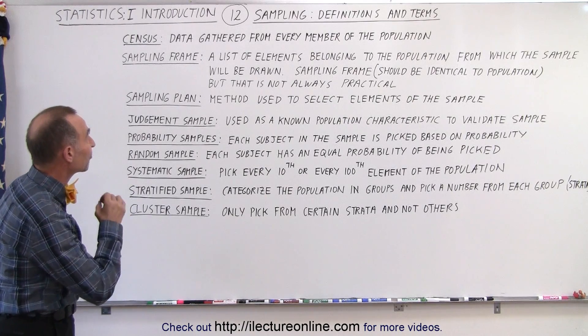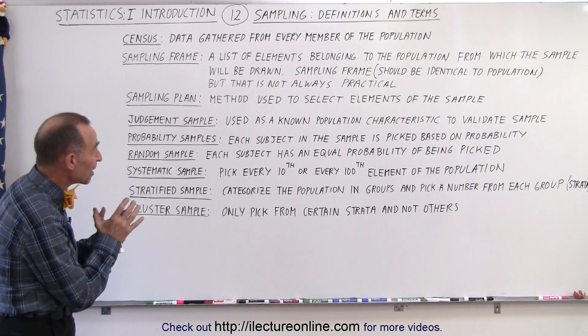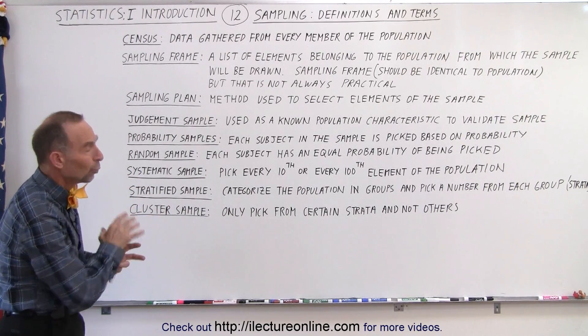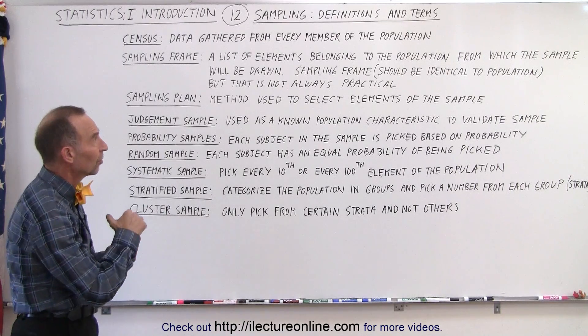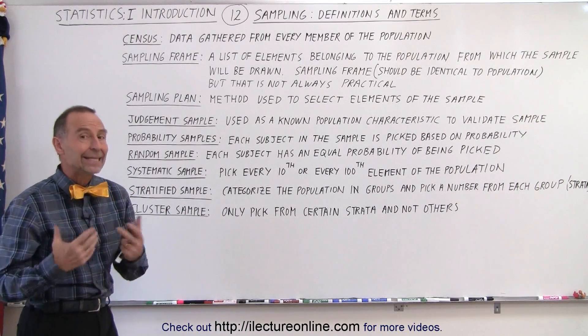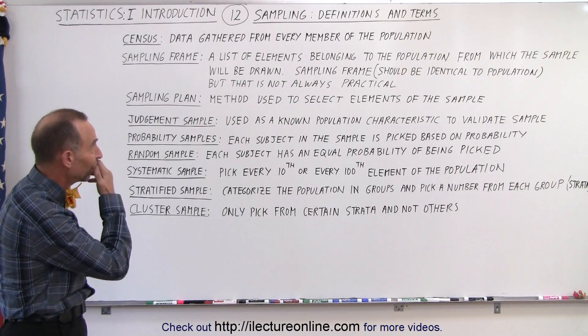Next, the sampling frame. Now, the sampling frame is a list of elements belonging to the population from which the sample will be drawn. The sampling frame should be identical to the population, ideally, but not always practical.